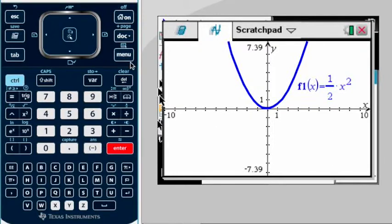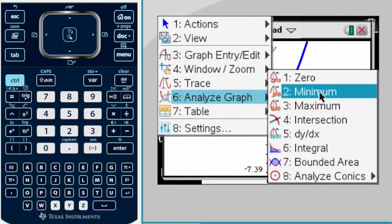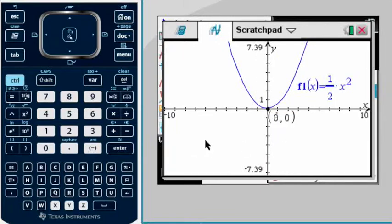Now when you see this, you can immediately tell that this one doesn't have a zero. So I'm gonna show you what's gonna happen there. So first we're gonna find our minimum. Menu, Analyze Graph, minimum. It's zero, zero.